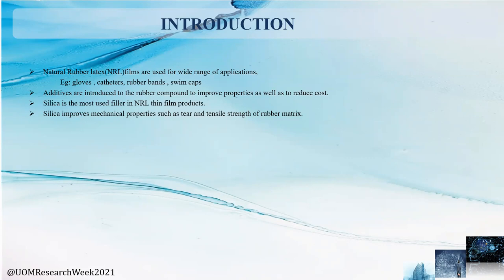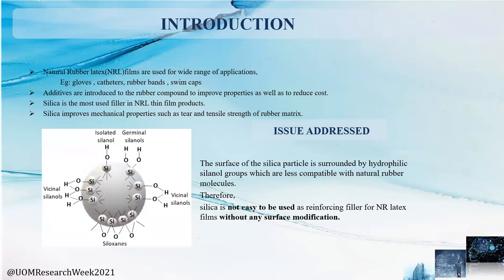As of now, silica is one of the most used fillers in natural rubber thin film manufacturing, and it is a known fact that silica improves mechanical properties such as tear and tensile strength of the rubber matrix. However, the issue with incorporating silica into the rubber matrix is that silica particles are surrounded by hydrophilic silanol groups, which are less compatible with natural rubber molecules, which are hydrophobic in nature. Therefore, silica is not easy to use as a reinforcing filler for natural rubber latex films without surface modification or assistance of a dispersing agent.